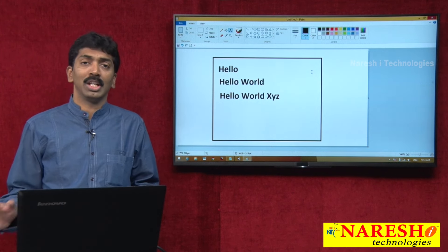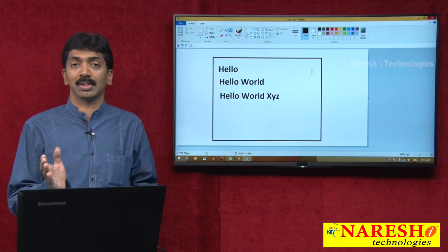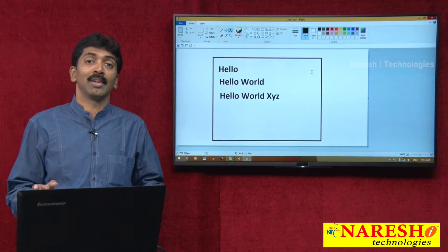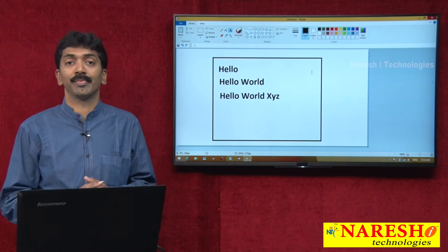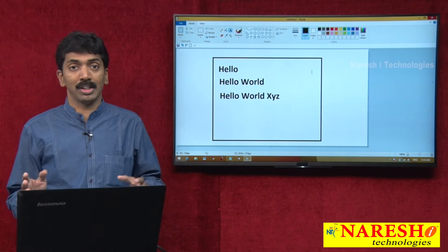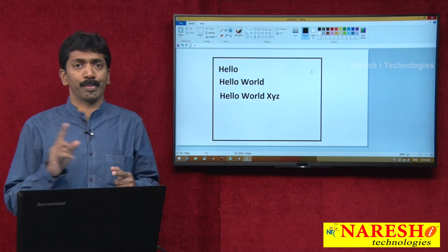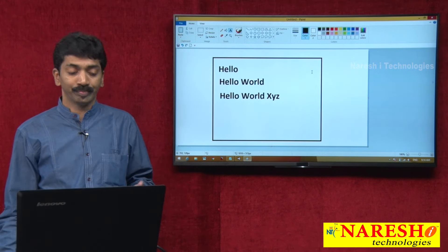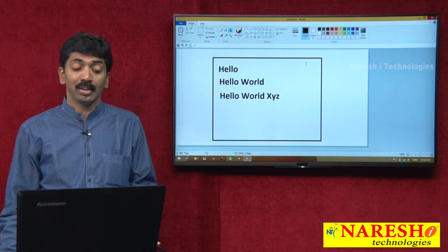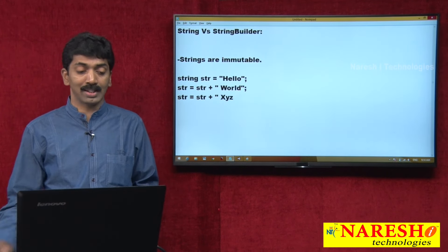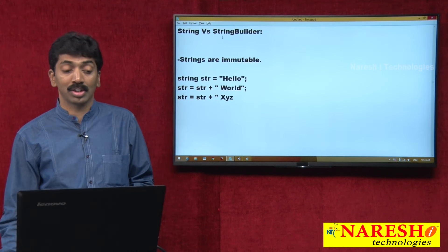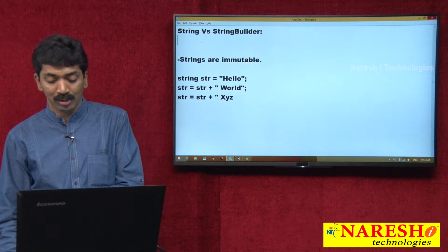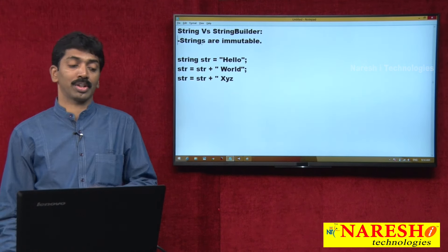Why? If you make 100 changes, 100 different copies will be maintained plus the original copy — 101 copies total. That is the reason why we need to use a class called StringBuilder whenever there are changes to be performed on a string.